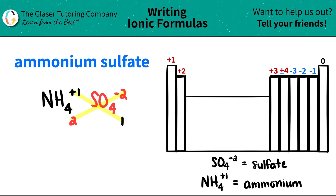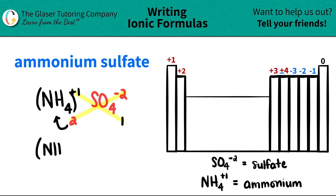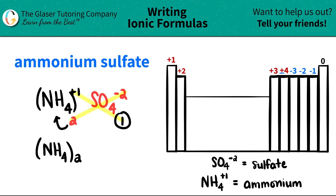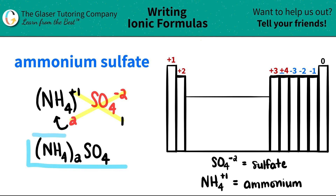Now we're ready to just write the formula. Keep in mind, if you have multiple polyatomics — like I do for ammonium, I have two of them — I need to put it in parentheses. So it would be parentheses NH4, because that's the whole polyatomic, and then I say I have two of them. For the sulfate, since I only have one, I don't have to use parentheses. So the sulfate is just SO4. So ammonium sulfate is (NH4)2SO4. And that's it.